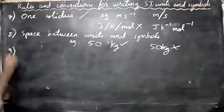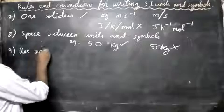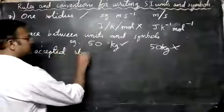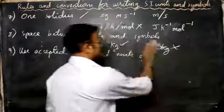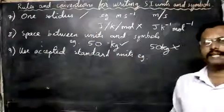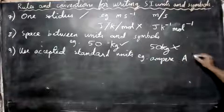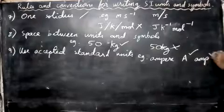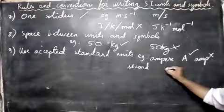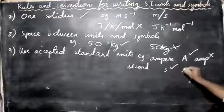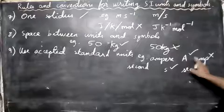The ninth rule: use only accepted standard abbreviations for units. For example, the unit for electric current, ampere, should be written as capital 'A' only — writing 'amp' is wrong. Similarly, second should be written as small 's' only — writing 'sec' is wrong.